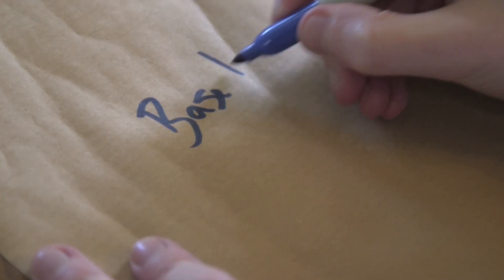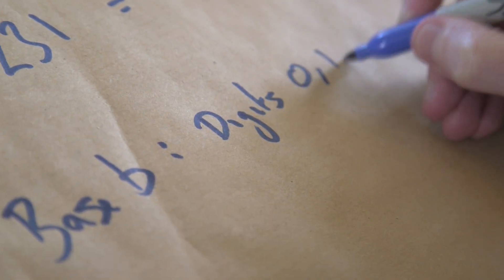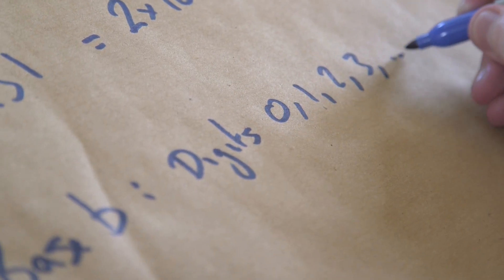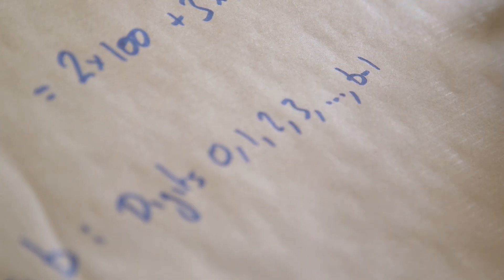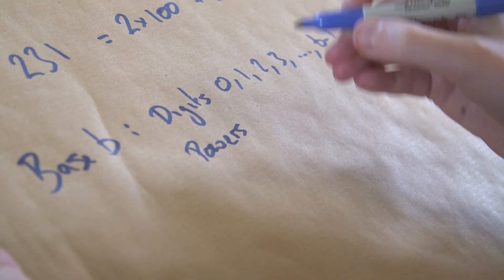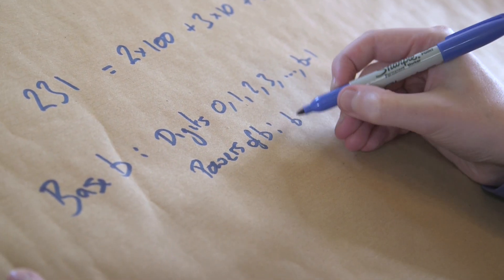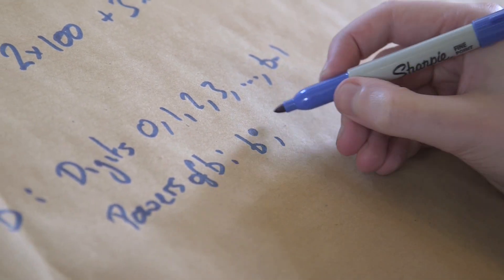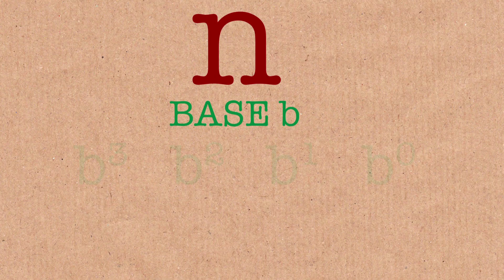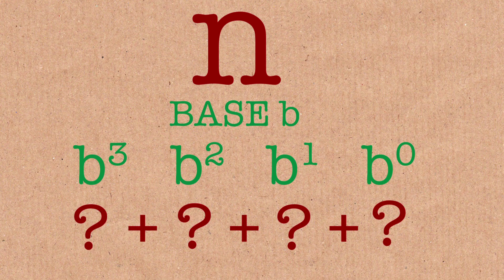We can choose any base. In general, if we had a base — let's call it base B — what that means is we're using the digits 0, 1, 2, 3, up to B minus 1. And then we are looking at powers of B. That would start with B to the 0, which is 1, and then B itself, then B squared, B cubed, and B to the 4.